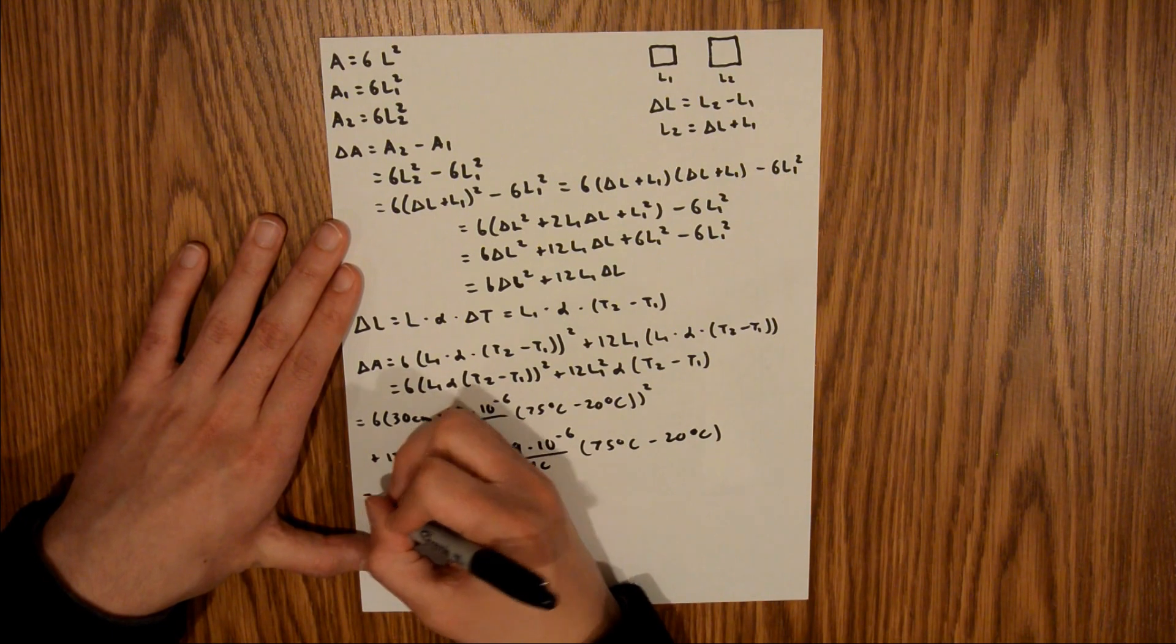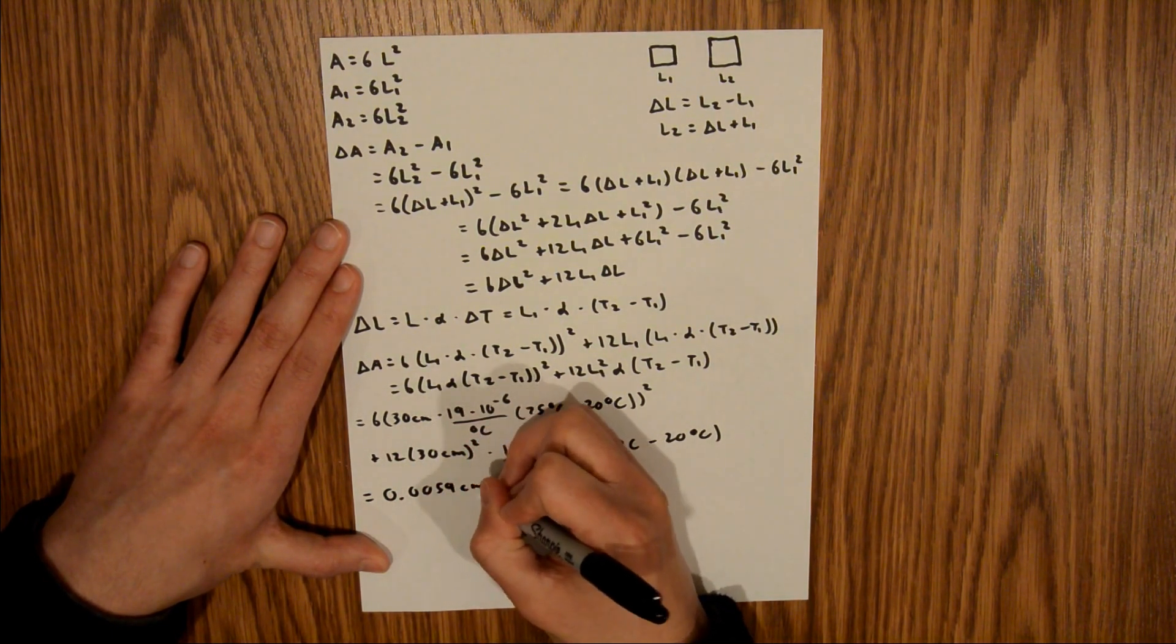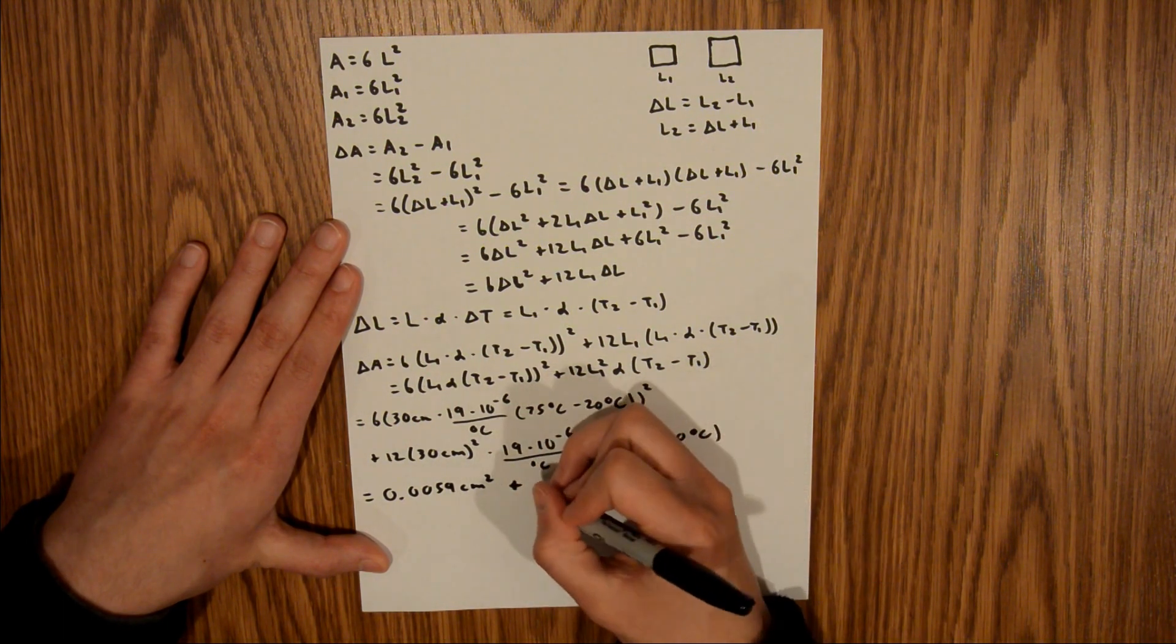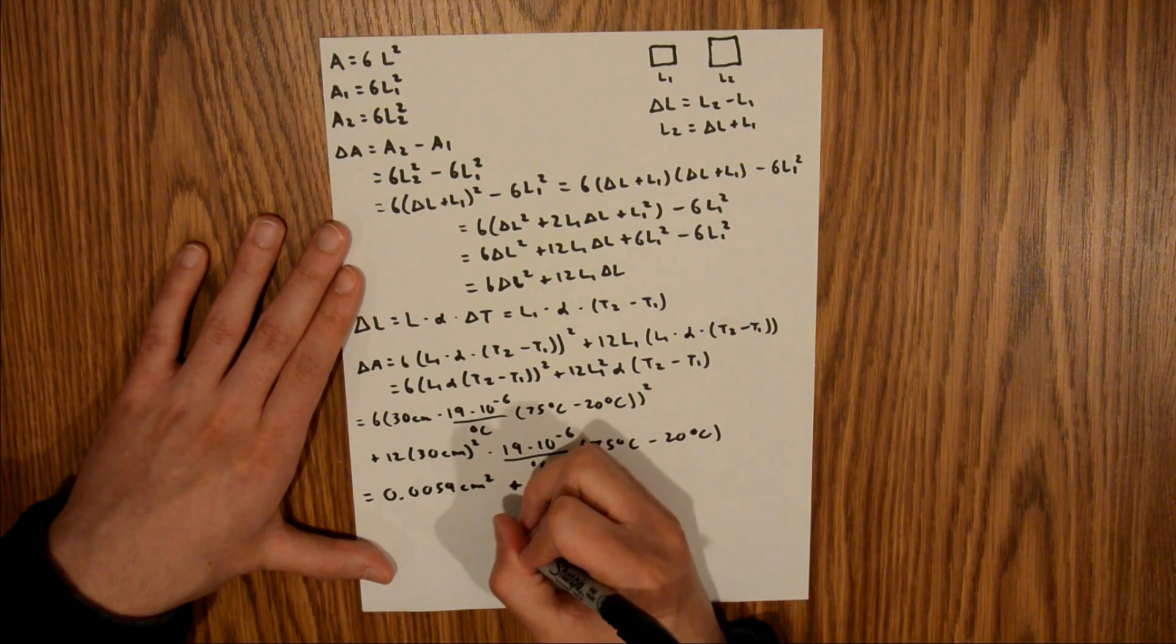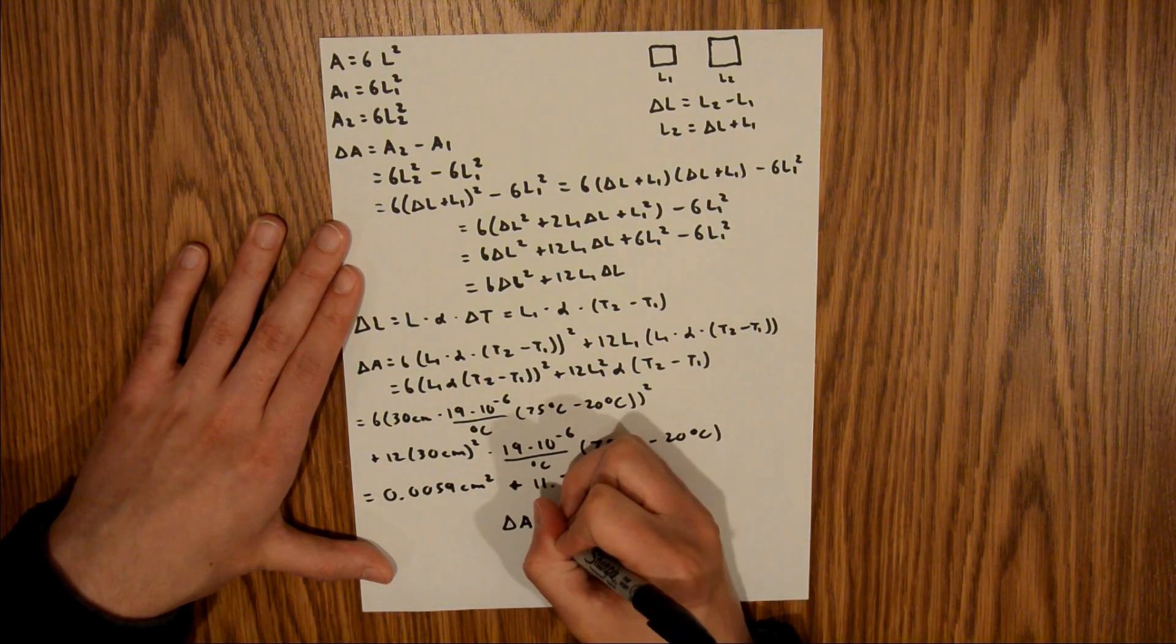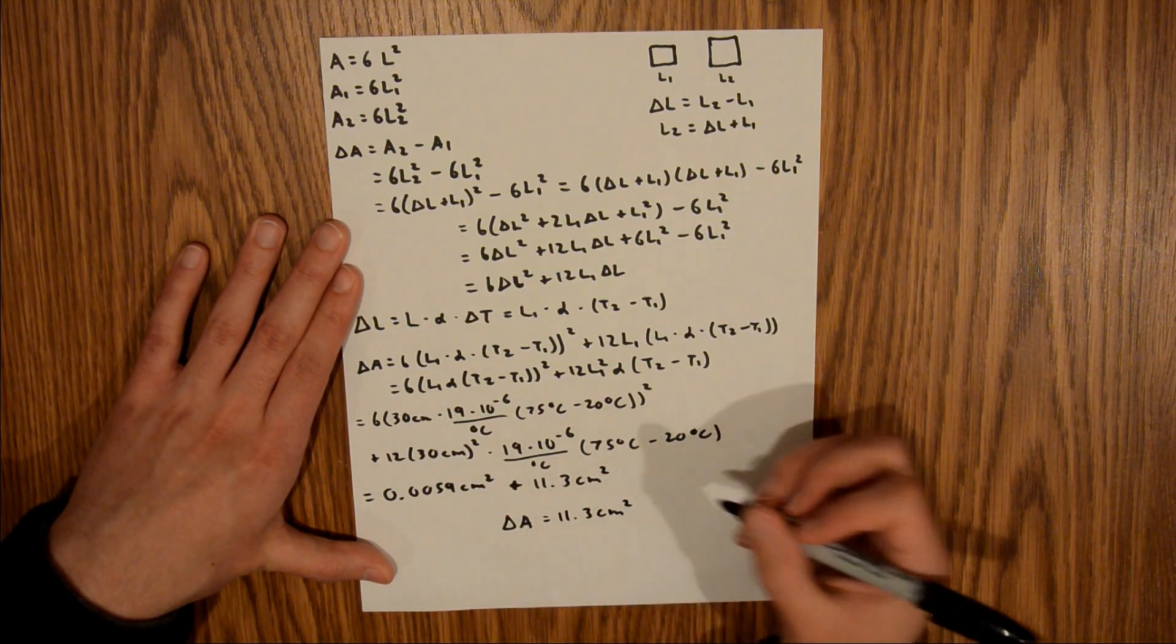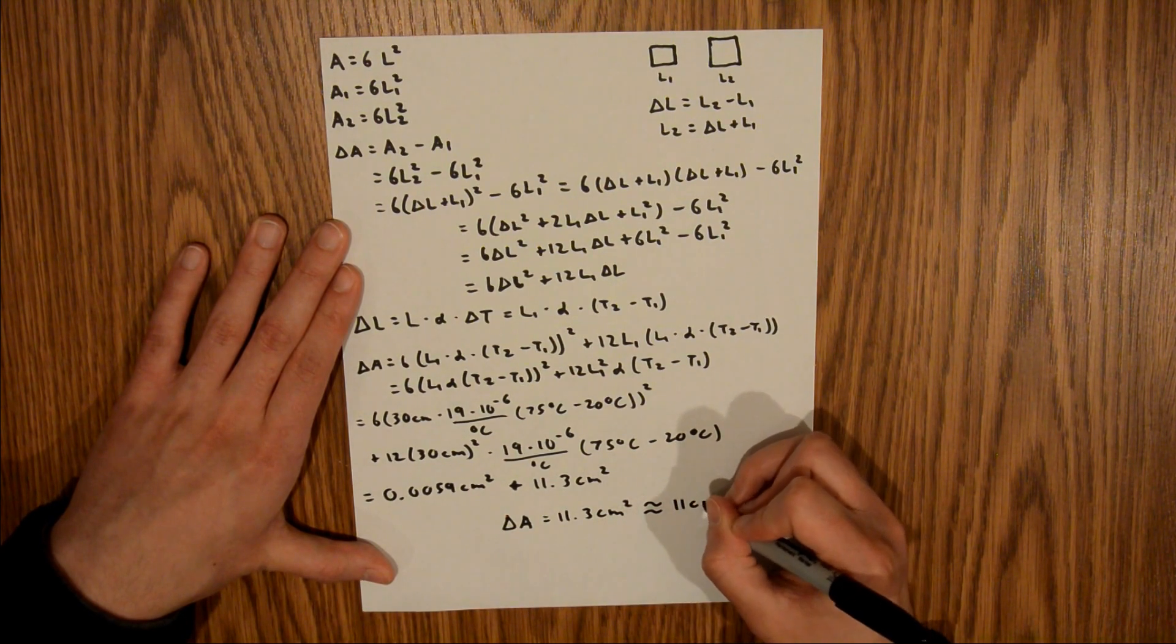And so those two terms are equal to 0.0059 centimeters squared and 11.3 centimeters squared, respectively. And if we add those together, our increase in surface area is equal to 11.3 centimeters squared, which if you decide to round it to two significant figures is 11 centimeters squared.